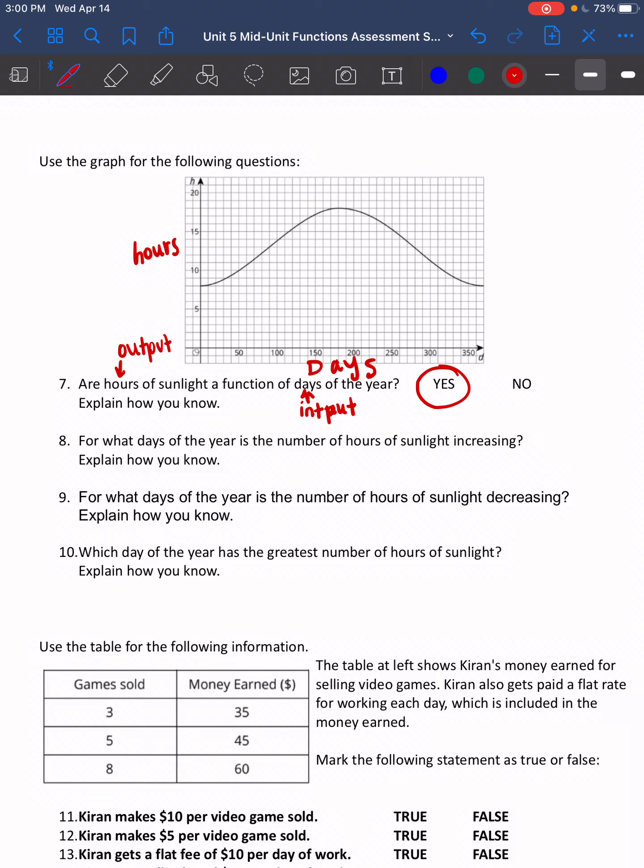For what days of the year is the number of hours of sunlight increasing? Well, that's when my line goes up, up, up. So starting here to the top, right about here, my line's going up, up, up. That would be about, if we're estimating, maybe 170. So from 0 to 170 days, sunlight is increasing. Decreasing, we're going to do the opposite. So probably from 170 days to 365 days, we're decreasing.